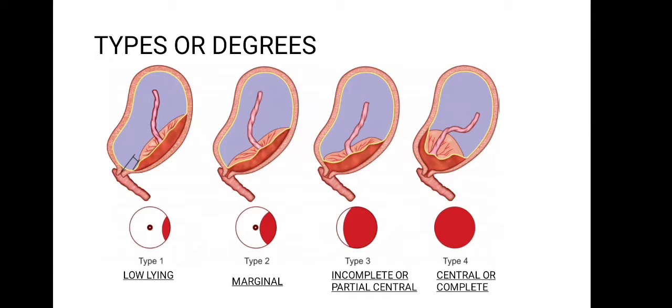Regarding degrees: type 1 and type 2 anterior constitute the minor degree, while type 2 posterior, type 3, and type 4 are major degrees. An important point to note is that type 2 posterior placenta previa is given the name 'dangerous placenta previa.'